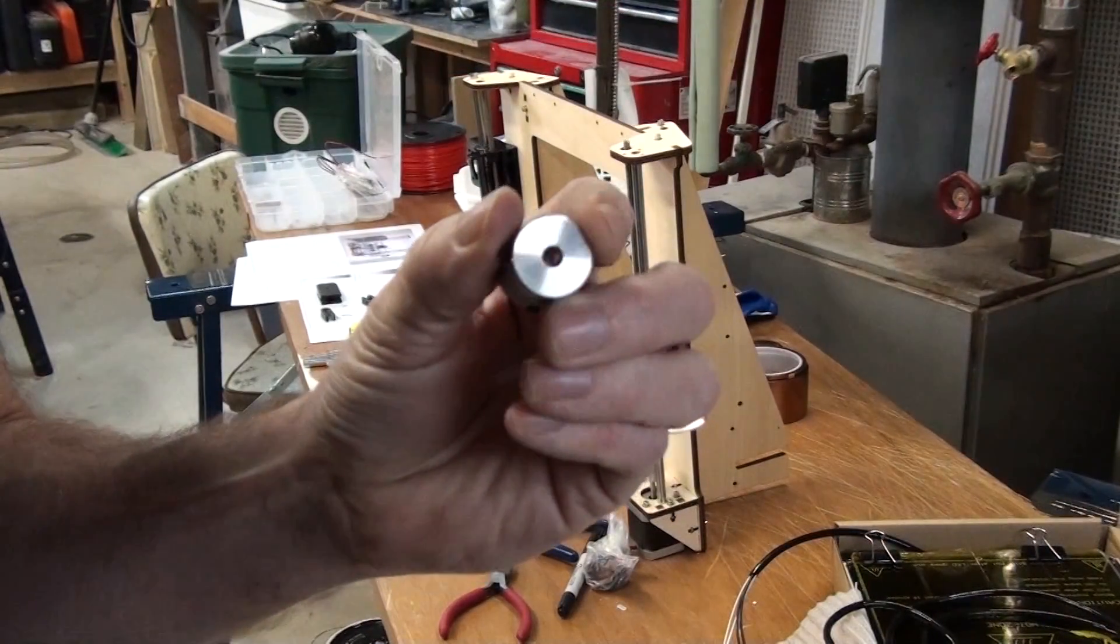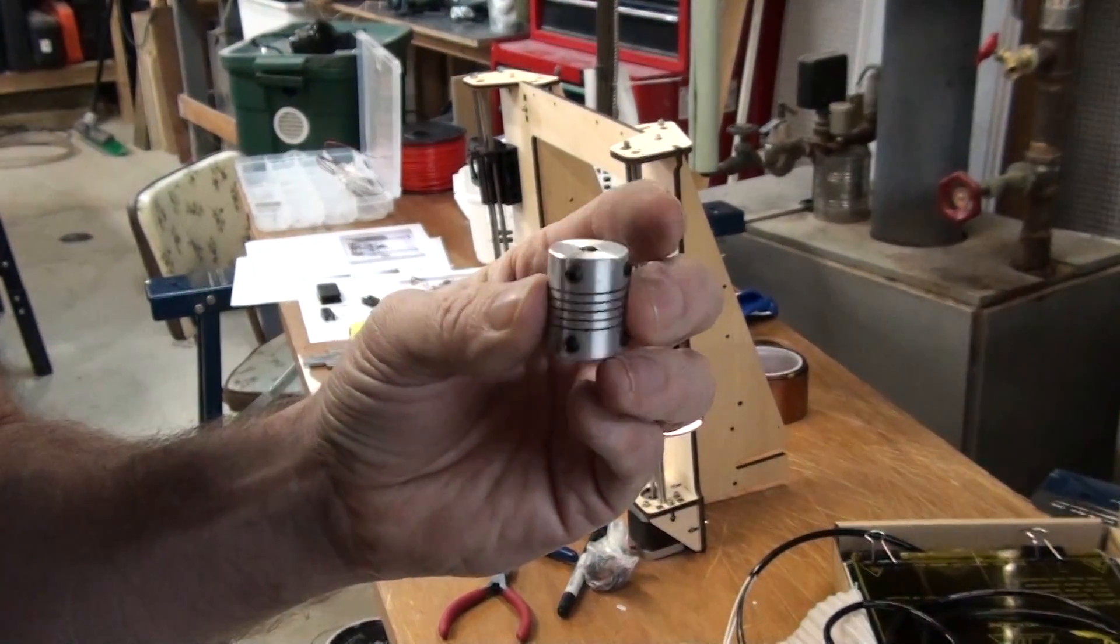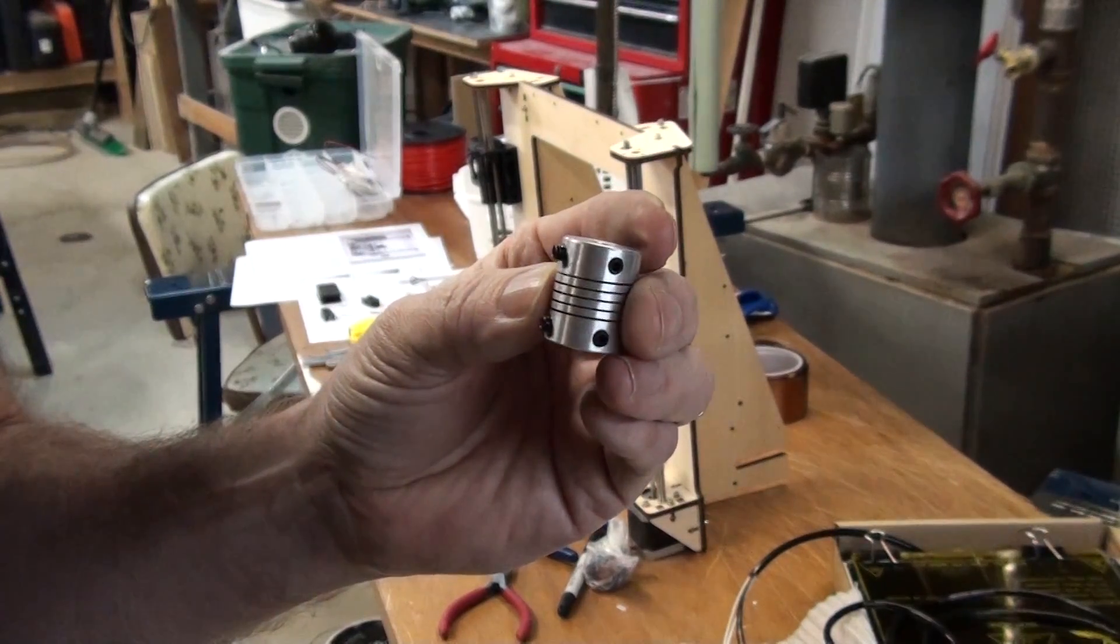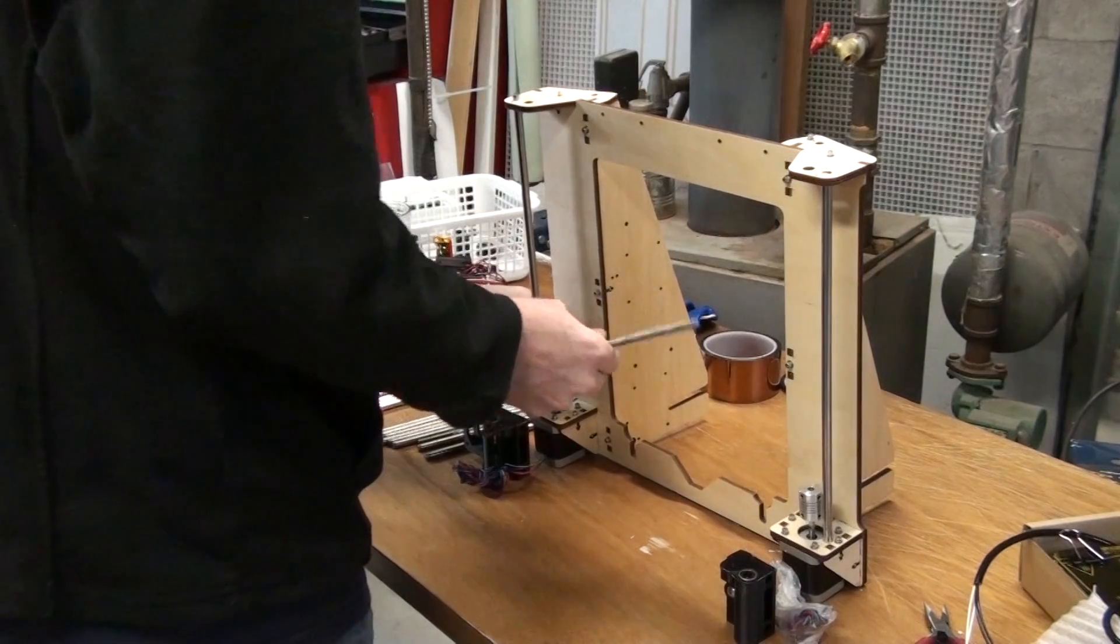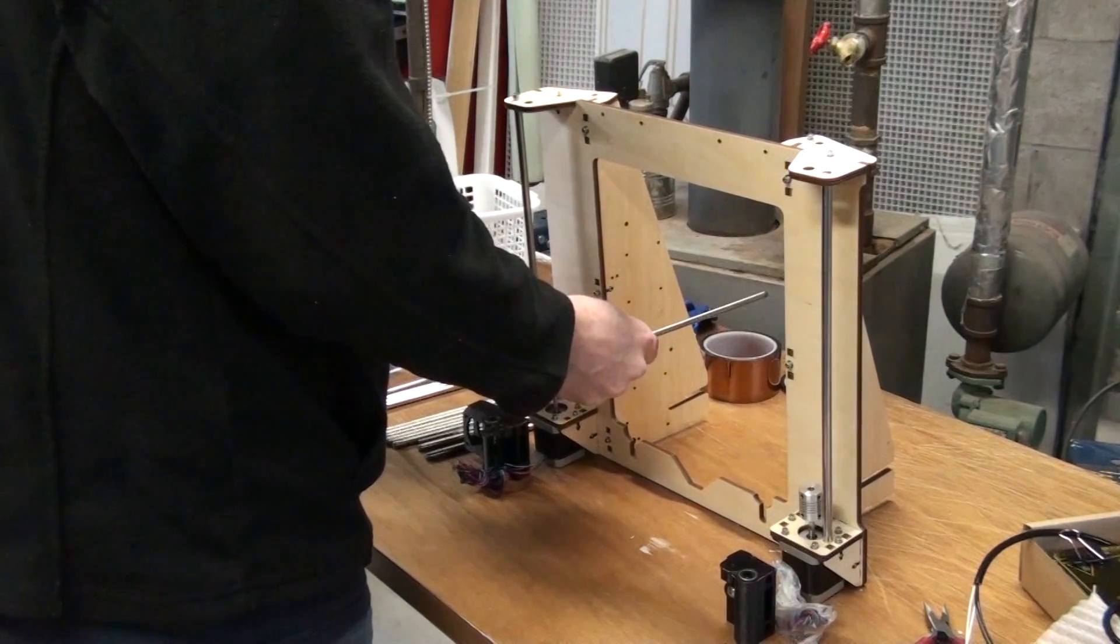These spiral couplers take the stress out of the torque from the stepper motor to the thread screw. The hole on one end is smaller than the hole in the other. Put the thread screw in the small end.